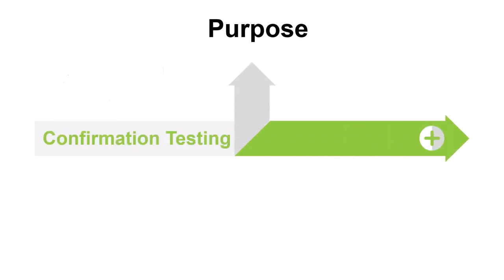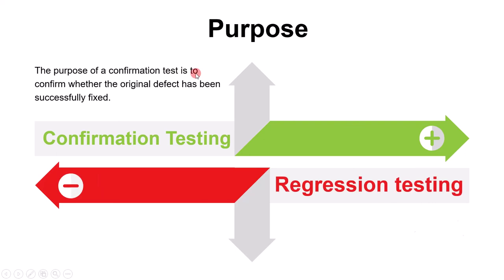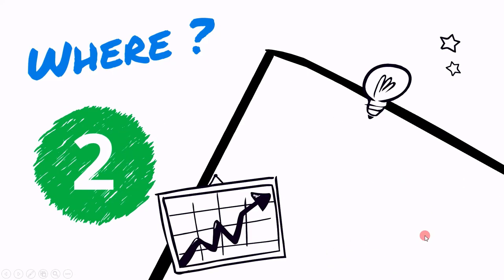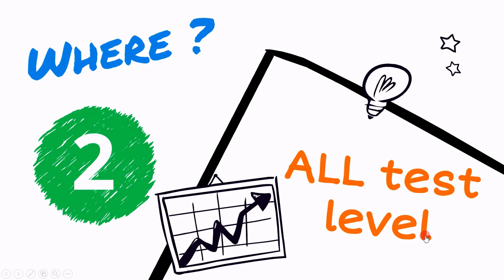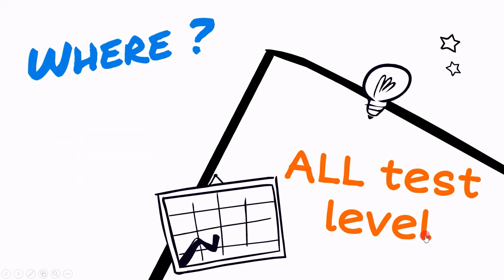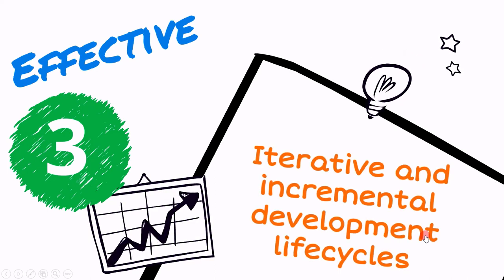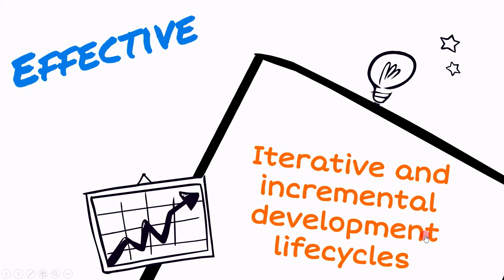The purpose of confirmation testing is to confirm whether the original defect has been successfully fixed. The purpose of regression testing involves running tests to detect unintended side effects. Similar to other test types, change-related testing is performed at all test levels, and it is especially effective at iterative and incremental development life cycles, such as for an agile project.